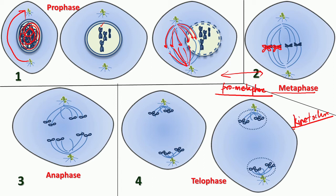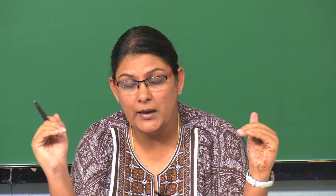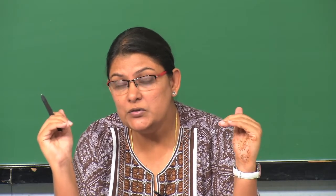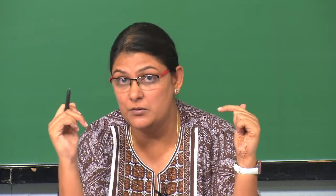During metaphase, these chromosomes start arranging right at the equatorial plane of the cell. You can remember metaphase as the point where the chromosomes meet in the middle of the cell — 'M' for middle. In metaphase, the condensed chromosomes arrange themselves along the equatorial plane, and each chromosome is connected to the spindle fibres through the kinetochore.